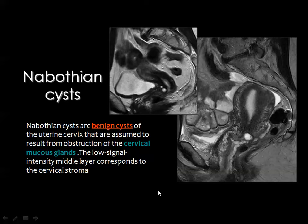An incidental finding we may encounter during examination is small cystic lesions in the uterine cervix, known as Nabothian cysts. These are retention cysts in the cervical mucus glands, they are benign and contain fluid or mucus. They appear as bright signal on T2-weighted images and are considered an incidental finding.